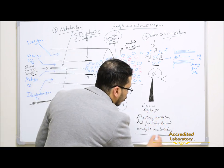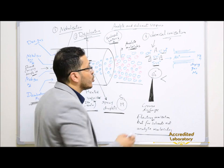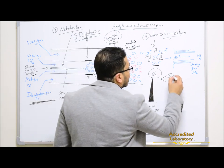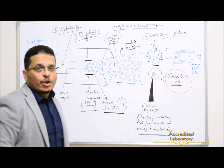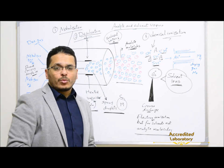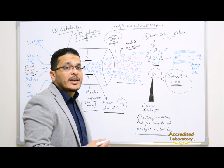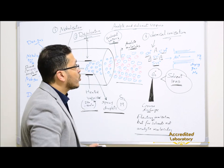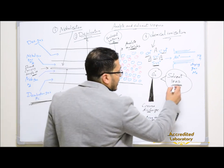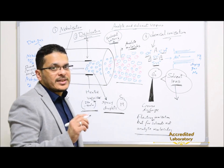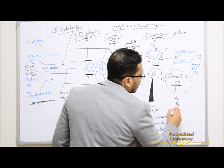After that, corona discharge will produce electrons that will make ionization for the solvent molecules to form solvent ions. These solvent ions will react with other solvent molecules to form more solvent ions, so solvent ions should be produced in higher concentration than analyte molecules. After that, these solvent ions will make ionization through the chemical ionization process for analyte molecules.